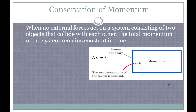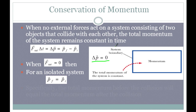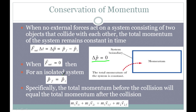When no external forces act on a system consisting of two objects that collide, the total momentum of the system remains constant — no change in net momentum. Each object's momentum will change, but the total momentum stays the same, so the total change in momentum is zero. Whenever our net force equals zero, the final momentum equals the initial momentum. Momentum before equals momentum after — that's all you've got to remember. With two objects, both of their momentums equal their momentums after.